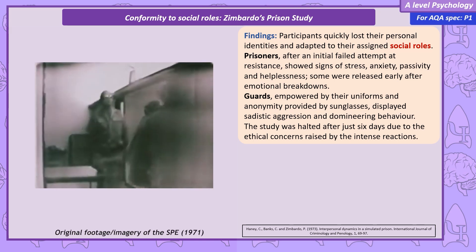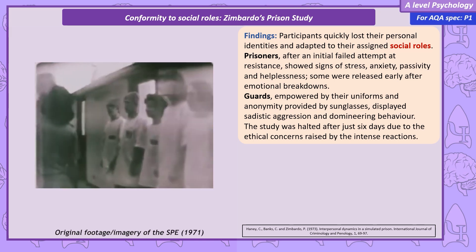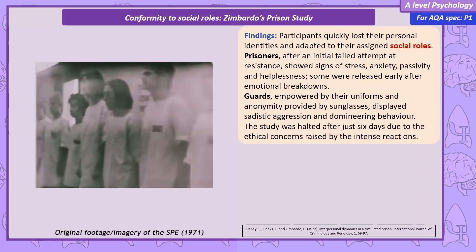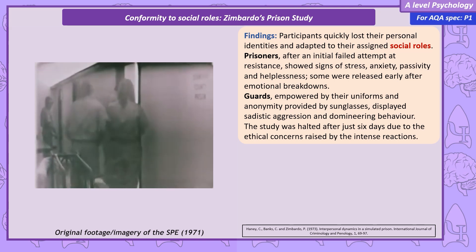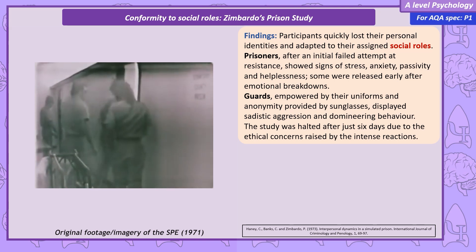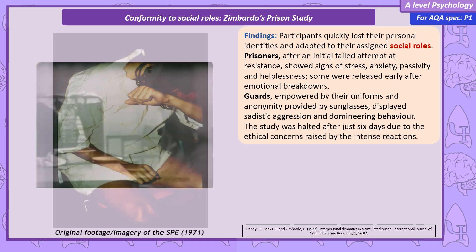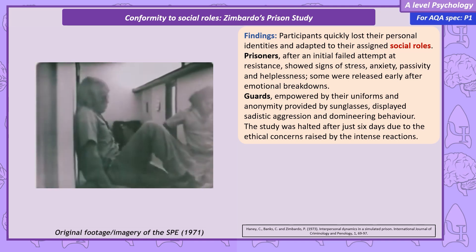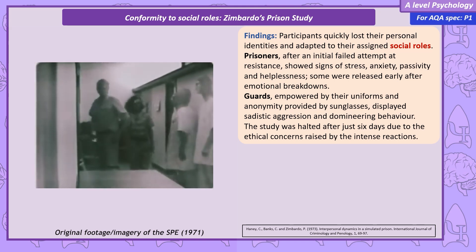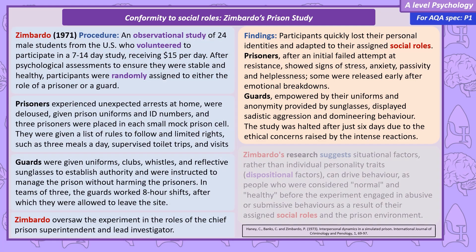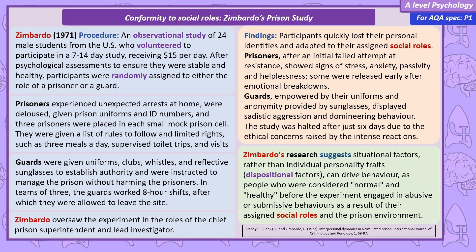Zimbardo found that both prisoners and guards quickly lost their individual identities and took on the social roles of prisoner or guard. The prisoners initially attempted to resist — barricading themselves in their cells using their bedding to block the cell doors. The guards quickly crushed the rebellion, and the prisoners became passive. As the experiment progressed, the prisoners showed significant distress, to the point that a number were released early after experiencing mental breakdowns. The guards became authoritative, and some became sadistically aggressive. Due to the extreme responses, after six days the study was ended early. Zimbardo claimed that this demonstrates that the situational power of the prison environment can make otherwise mentally healthy individuals act out social roles that lead to highly aggressive behaviours.